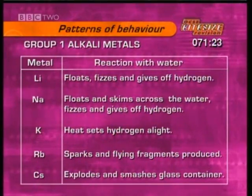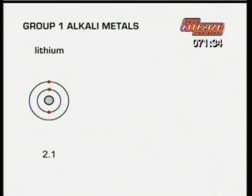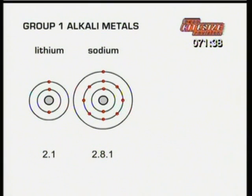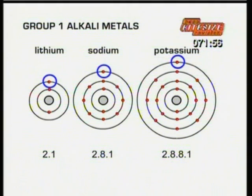Why are they all so reactive? By their position in group 1 of the periodic table, we know they've all got one electron in their outer shell. Lithium has 2 and 1 electrons. Sodium has 2, 8 and 1 electrons. Potassium has 2, 8, 8 and 1 electrons, and so on. In each case, the outer electron is desperate to combine with something else, which is why the alkali metals are so reactive. But why are the metals more reactive as they go down the group? It's because each successive metal has one more electron shell, which puts that single outer electron further away from the positive nucleus. That makes the bonding weaker, so the single electron can more easily combine with something else, making each element more reactive than the one before.